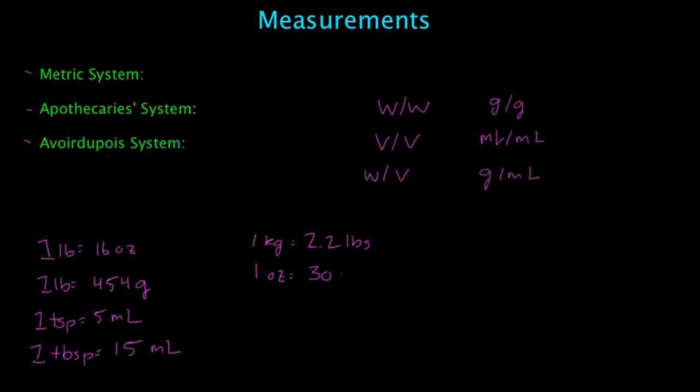For every one ounce there's going to be 30 milliliters. For every one gallon there's 3,840 milliliters, and another one that's good to know is one pint is equal to 480 milliliters.